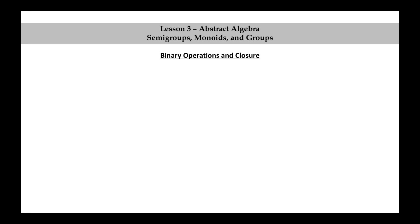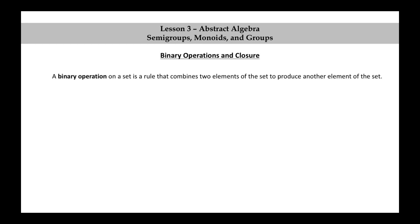Binary operations and closure. A binary operation on a set is a rule that combines two elements of the set to produce another element of the set.